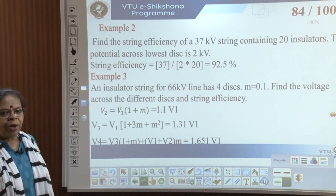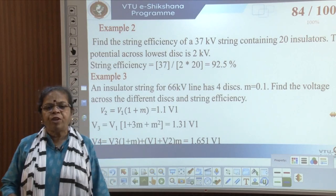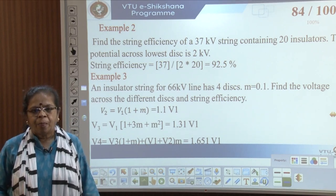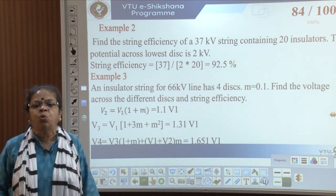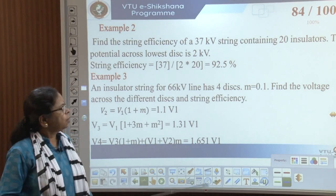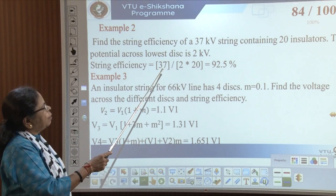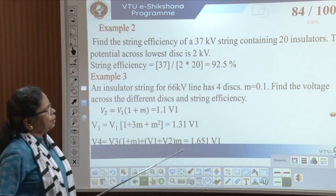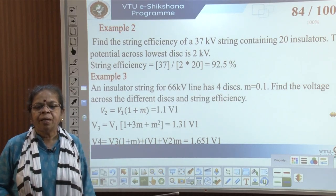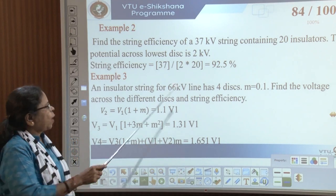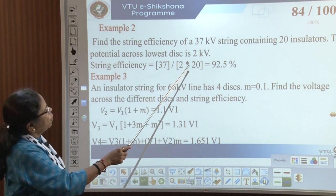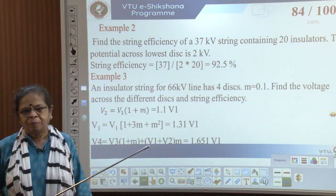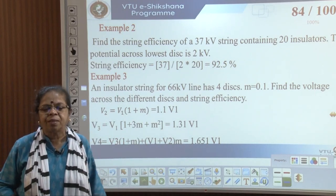Example 2: Find the string efficiency of a 37 kV string containing 20 insulators where the potential across the lowest disc is 2 kV. Efficiency = 37 / (2 × 20) = 92.5%. Since nothing is mentioned about three-phase, this is treated as single phase.